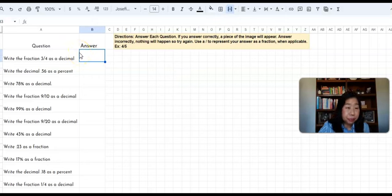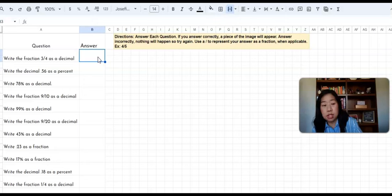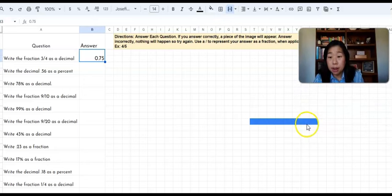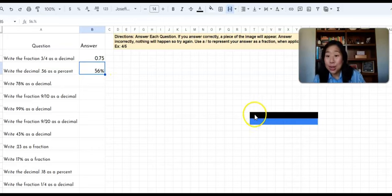So in this activity, all about fractions, decimals, and percents, the first question is asking me write the fraction three fourths as a decimal. So I'm going to write three fourths as a decimal. 0.75 hit enter. So you can see here that a strip of blue has appeared on the screen. This tells me, ooh, that means I got it right. Write the decimal 0.56 as a percent. Boom. Now you can see a strip of black has appeared.